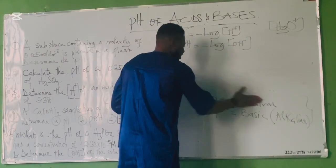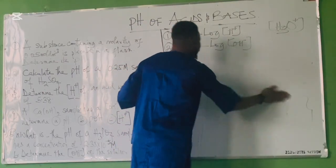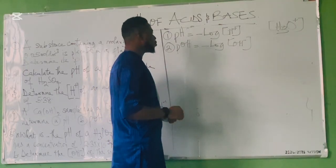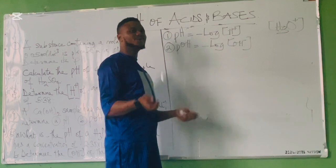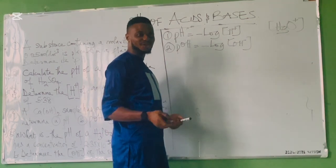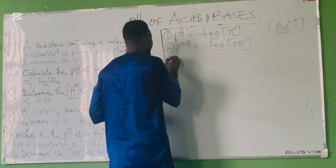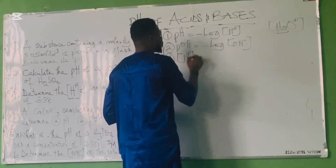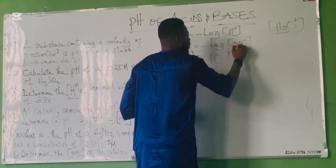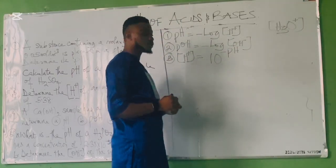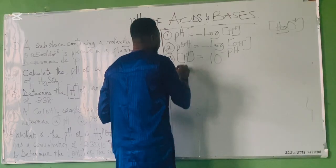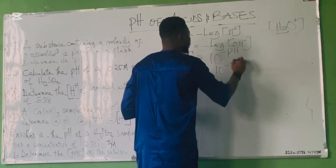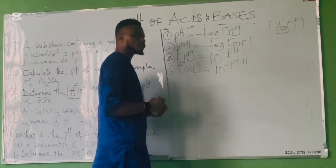To find hydrogen ion concentration from pH: [H⁺] = 10^(−pH). To find hydroxyl ion concentration from pOH: [OH⁻] = 10^(−pOH). We also have Kw, the water dissociation constant. The value of Kw = 1 × 10⁻¹⁴, and its formula is Kw = [H⁺] × [OH⁻].